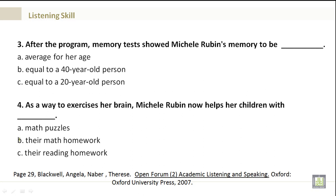Number 3. After the program, memory tests show that Michelle Rubin's memory was: A. Average for her age. B. Equal to a 40-year-old person. Or C. Equal to a 20-year-old person.